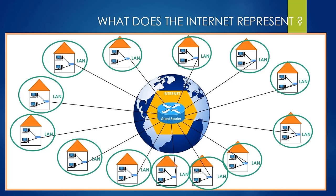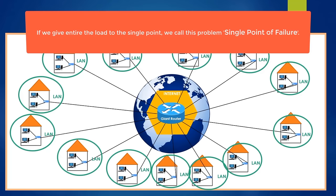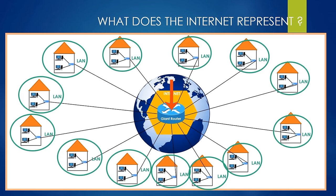But this is not the only problem. If there was only one router, the entire load of all devices in the world would be on that router. In computer science, we don't want to give all the load on a single point — we even call this problem the 'single point of failure.' Imagine this router breaks somehow — the internet of the whole world crashes down at the same time, because we only use a single router to connect all LANs around the world.